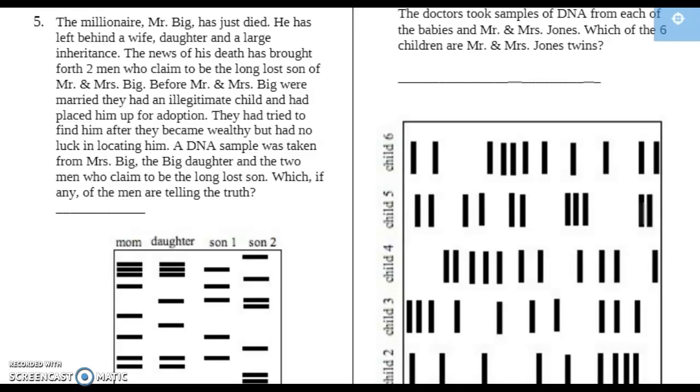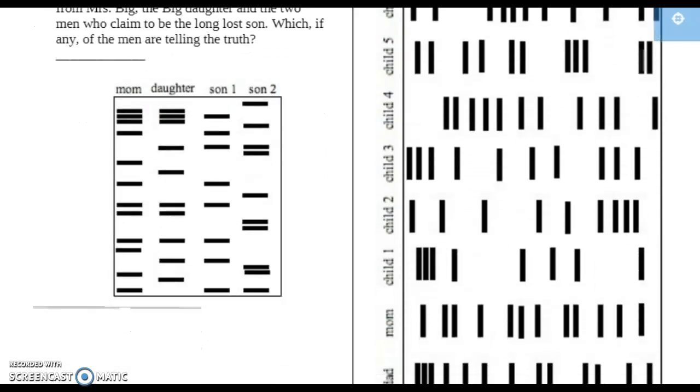Which, if any of the men, are telling the truth? Let's look at this one. This is Mom, so any of these bands that Mom has could have come from Mom. This is Daughter. It shows some bands. The bands that Daughter has that did not come from Mom would have had to come from Dad.